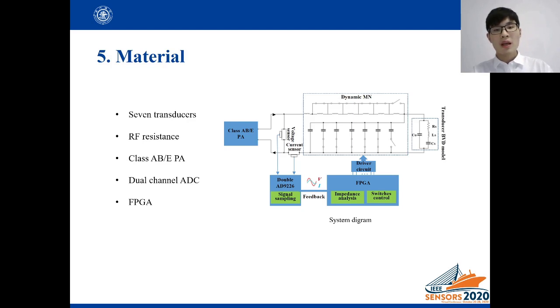To evaluate the efficacy of the proposed dynamic impedance matching network, class AB and class E power amplifiers were used to drive seven transducers and RF resistors. The output impedance of both power amplifiers is 50 ohm. The input values of class AB power amplifier's input was set to 30 mV, 40 mV and 50 mV. And the supply voltage of class E power amplifier was set to 5 V and 7 V.